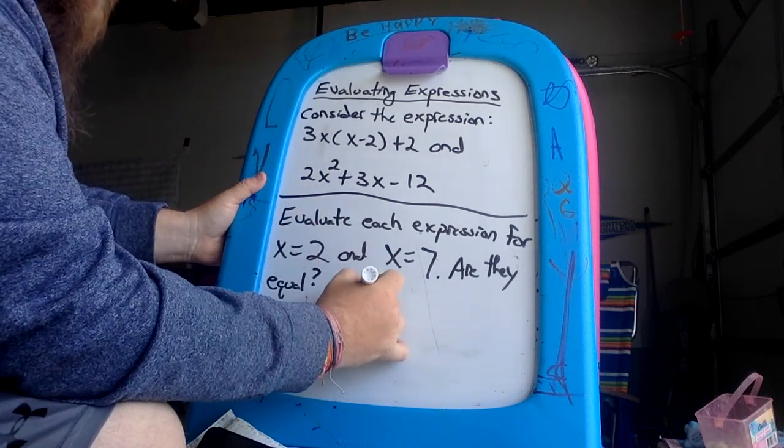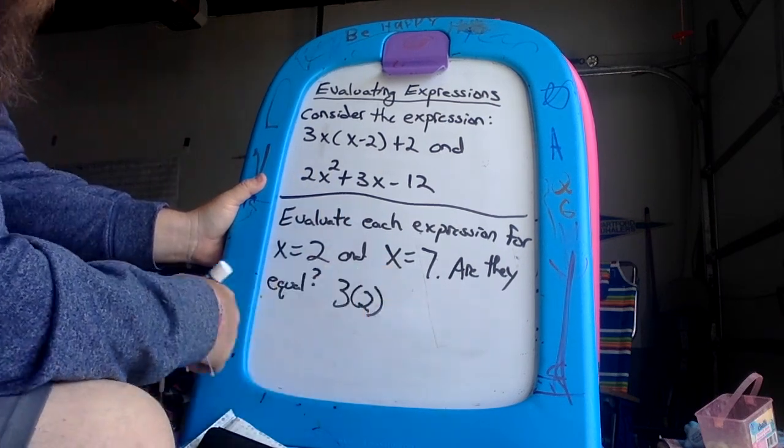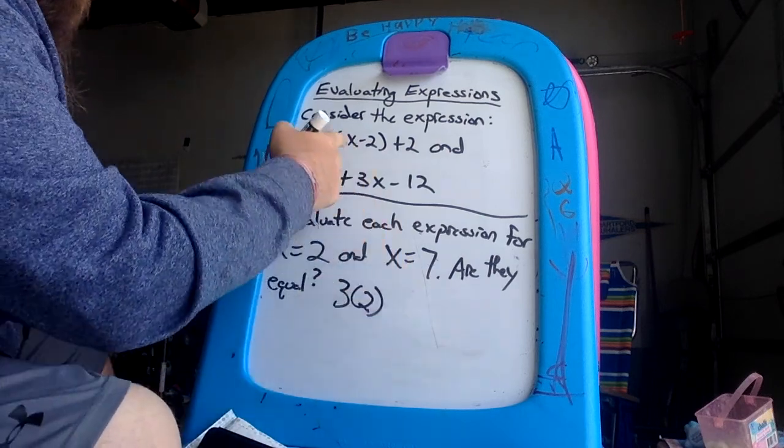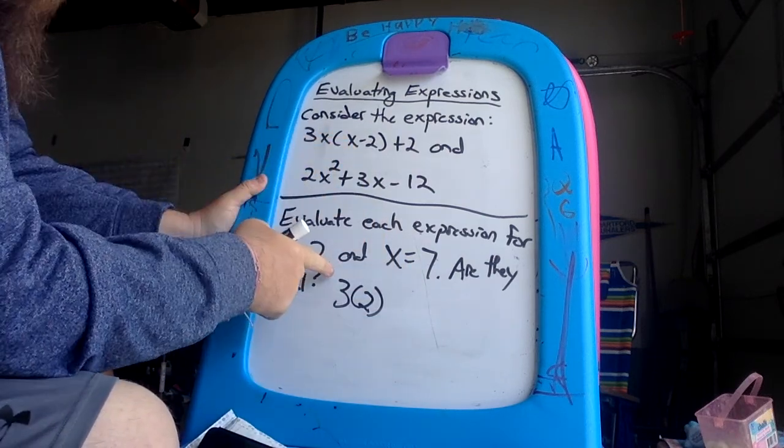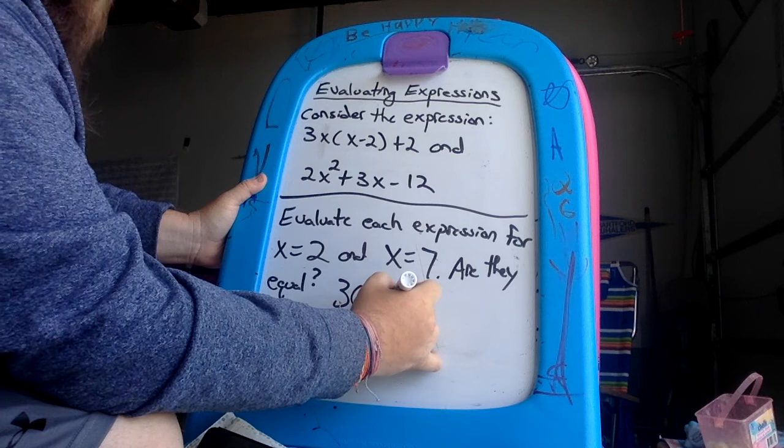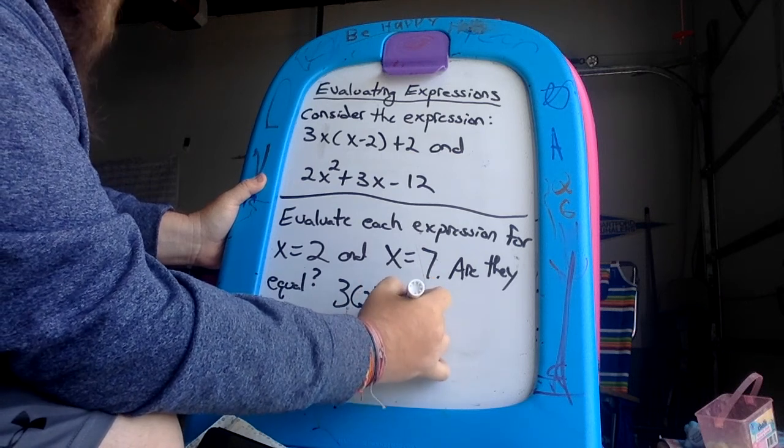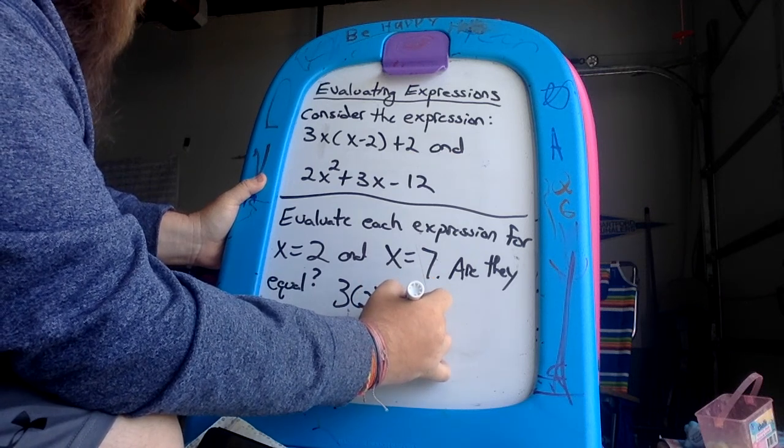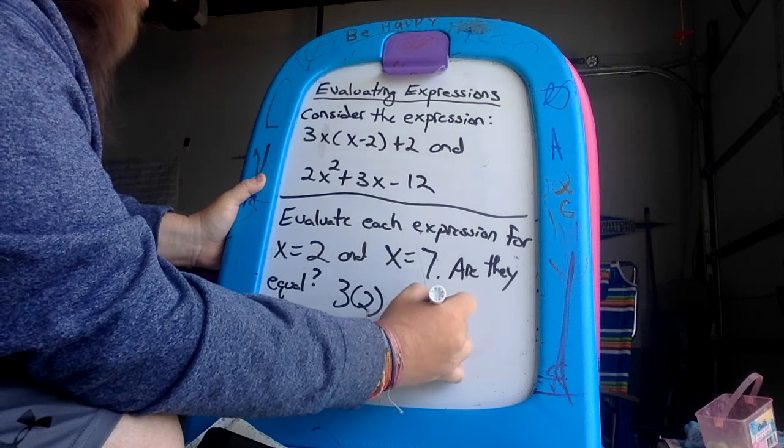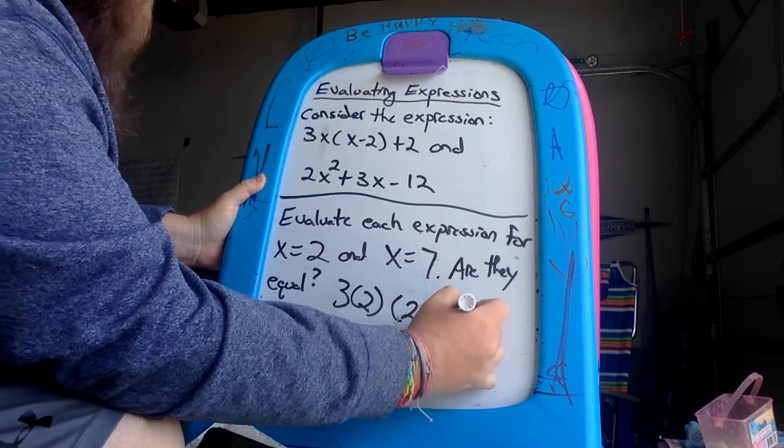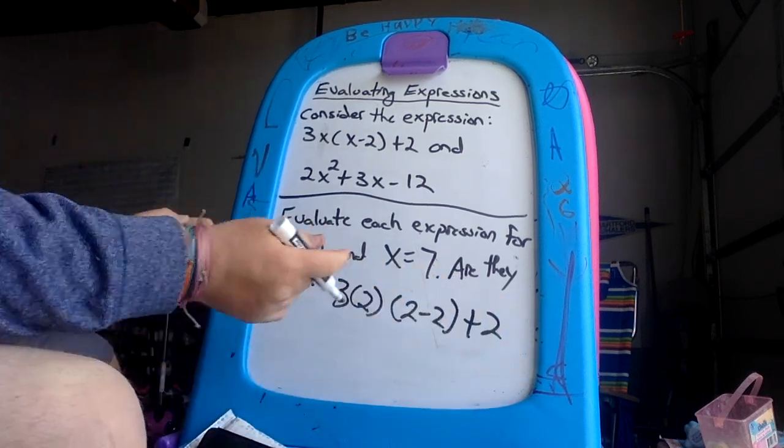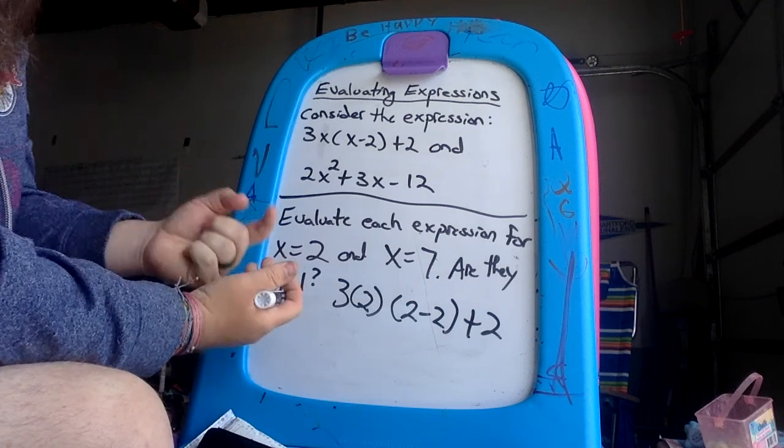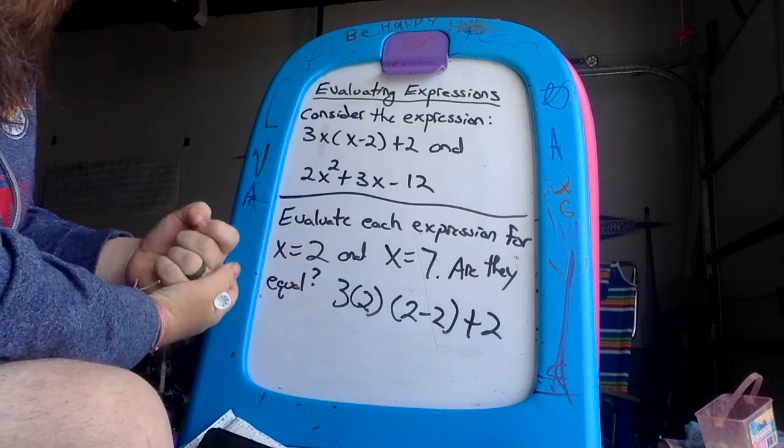This one's going to be 3x, we're taking the x on the number which is 2, so parentheses 2. You don't want to put 32. Parentheses 2, then again keep the same number, x stands for what, so we have parentheses inside which is 2 minus 2 close parentheses plus 2.